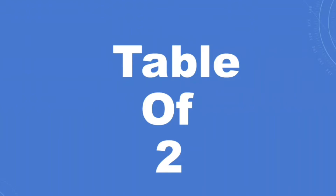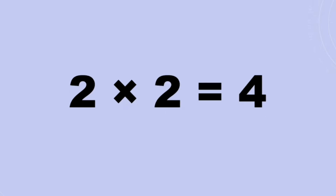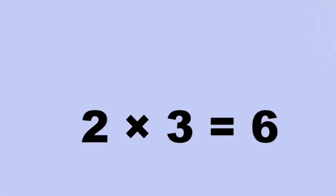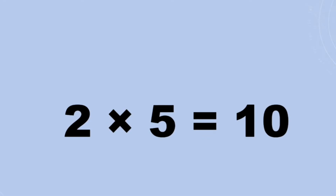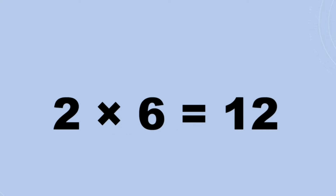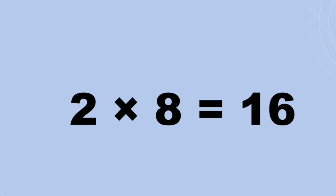Table of two. Two ones are two, two twos are four, two threes are six, two fours are eight, two fives are ten, two sixes are twelve, two sevens are fourteen, two eights are sixteen, two nines are eighteen, two tens are twenty.